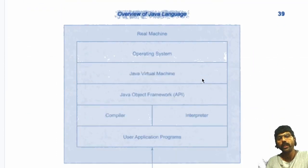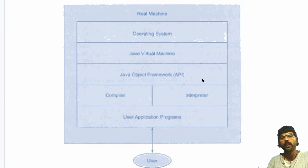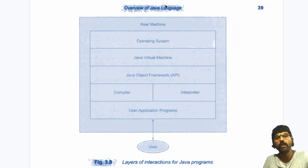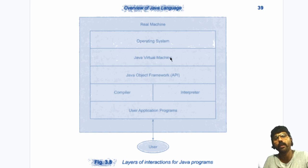This is the way our Java program works. This is our real computer — the real machine that we have. The operating system is running the Java Virtual Machine in memory. Above that, we have a Java object framework, compiler, interpreter, and Java program.